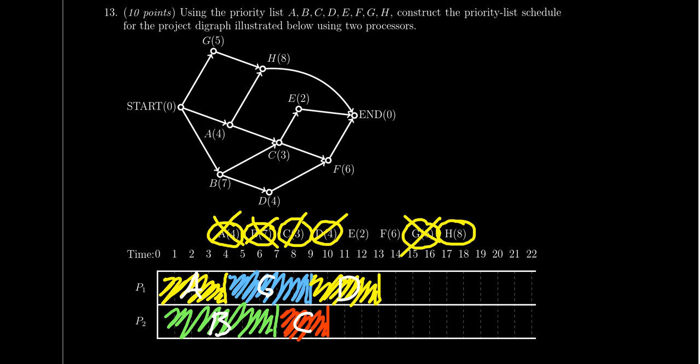We fast forward to time 10 now. At 10, C will be completed. C precedes E, so E is now open. C also precedes F, but D also has precedence over F, and D is currently in execution. So F does not open up right now. E is the highest priority, so that's going to be given to processor two. It'll take two units of time. We are currently at time 10, so that's going to go until time 12. E is now in execution.